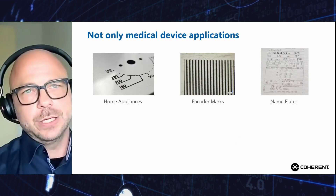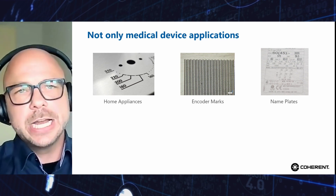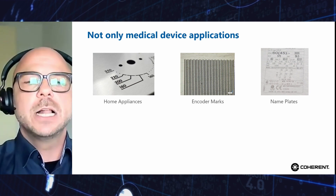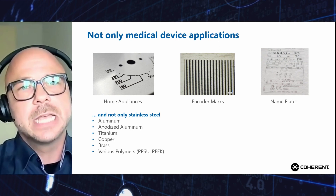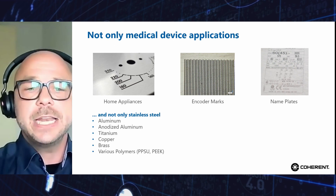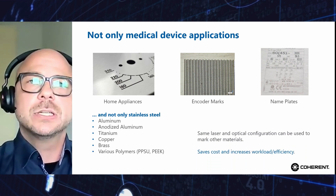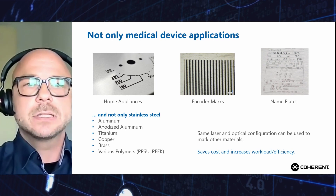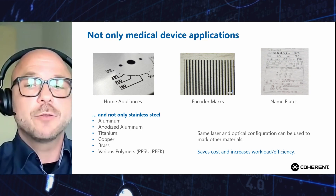It is not just the medical device industry that has high interest in this technology. This standard solution in a tailored process scenario can also be used in home appliances, encoder marks, nameplates, and more. The flexibility of ultra-short pulse lasers covers a wide range of materials — not just stainless steel, but aluminium, anodized aluminium, titanium, copper and various polymers and plastics. With the same laser and optical conversion offering such a great bandwidth of possibilities, it is a very economic and innovative solution that saves cost and increases workload efficiency.